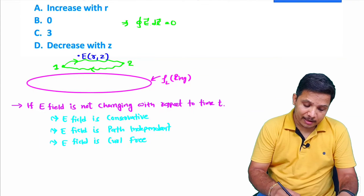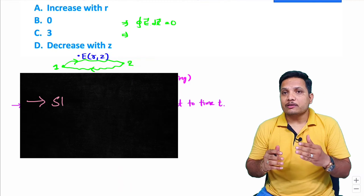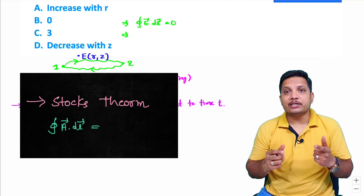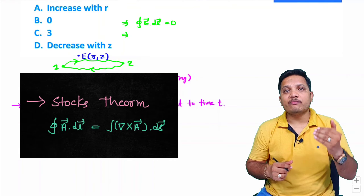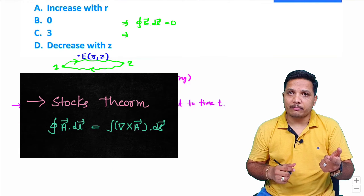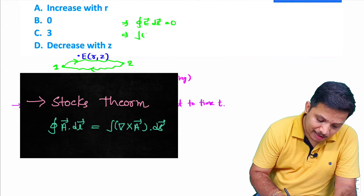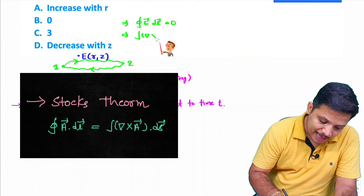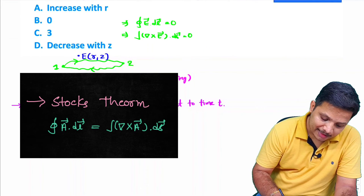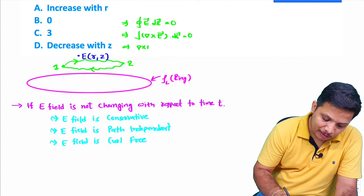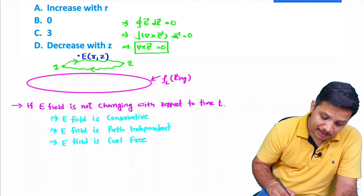To prove the electric field is curl free, let us apply Stokes theorem. Stokes theorem gives the relationship between line integration and surface integration: the line integration of a function equals the curl of the function surface integrated. So here, the line integration of electric field equals the surface integration of del cross E, and that equals 0. Therefore, del cross E equals 0, meaning the electric field is curl free.